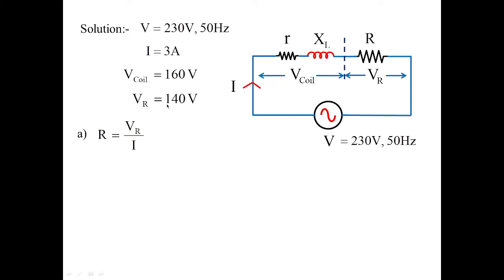Let us calculate the resistance. Since we know the voltage across the resistance and it is a series circuit, current remains the same. Applying 140 divided by 3 — where 3 is the series current — this gives the value of resistance as 46.66 ohms. So we have estimated the value of the non-inductive resistance.